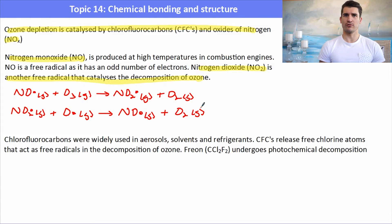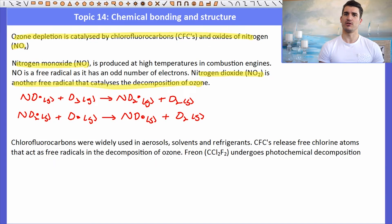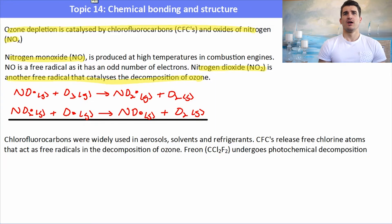The overall reaction here is if we look at what is produced and consumed we can actually do some cancelling to see what the overall reaction is. NO radicals are on both sides and NO2 radicals are on both sides as well so we can cancel those out, they're both produced and consumed. What's left over is our overall equation and we can see that our overall equation is just the decomposition of ozone which we actually wrote back a couple of slides ago.